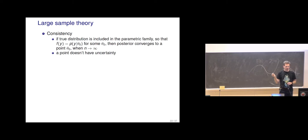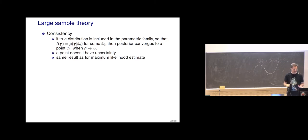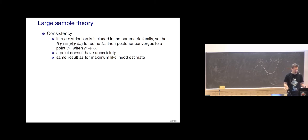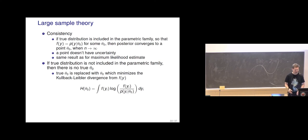When the posterior converges to a point, we no longer have any uncertainty — it's just that one point. This is the same result as for the maximum likelihood estimate. In cases where the posterior converges to a normal and eventually to a point with infinite data, the prior doesn't matter anymore, and the maximum likelihood and maximum of the posterior are at the same point. Of course, we usually only have a finite amount of data, and finite-sample performance is also important.